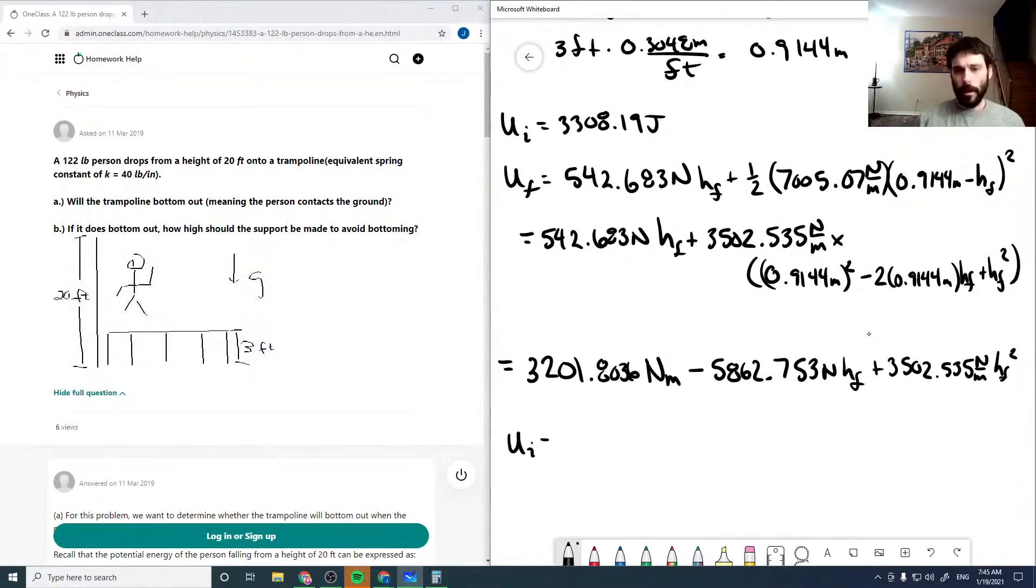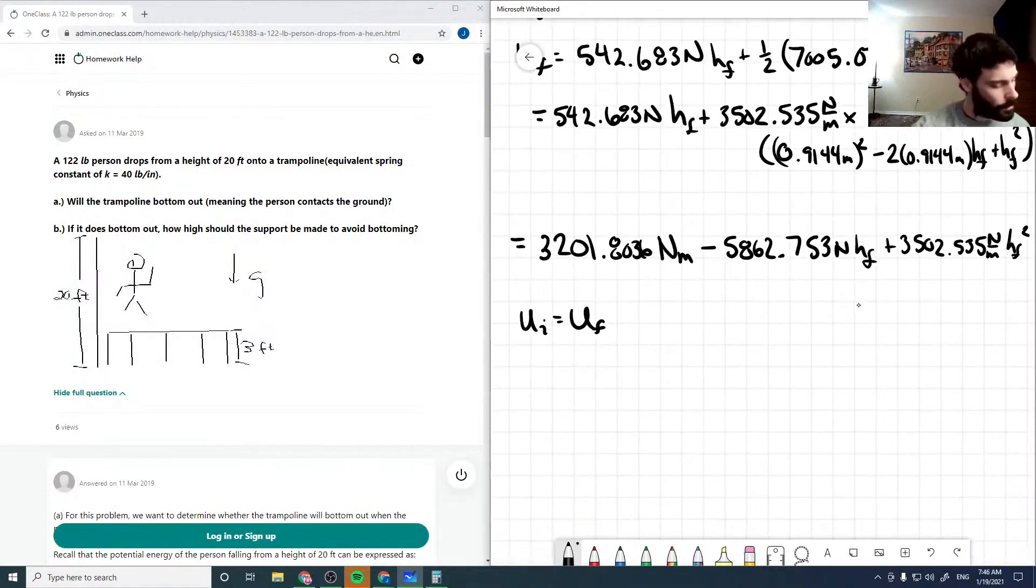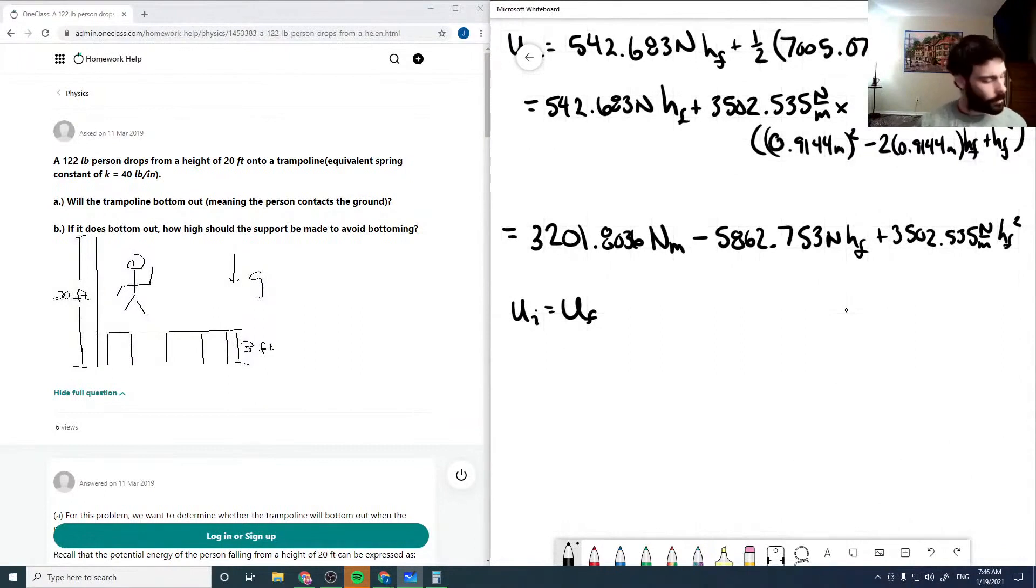Okay, so now our ui has to equal our uf, and so we can rearrange this. I'm going to put it into more of a quadratic equation. I'm just going to skip a couple steps here and say that we're going to end up with a quadratic equation. So that's just putting in our ui, rearranging in terms of hf, and then dividing by the a term. So now we've got a quadratic equation, so we can solve for our hf.